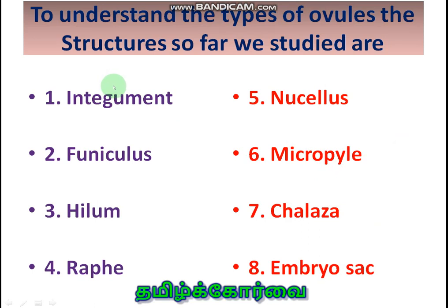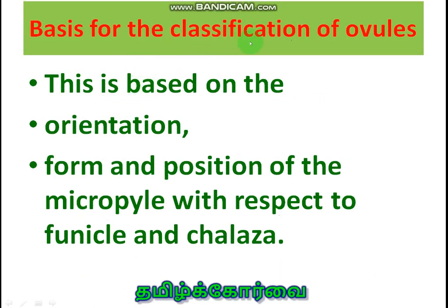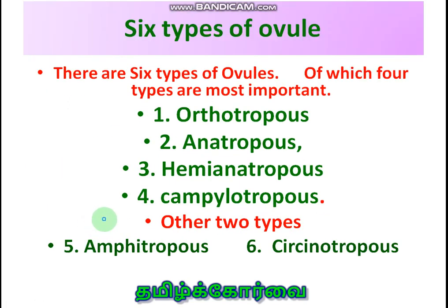These are the structures we studied so far: integument, funiculus, hilum, raphe, nucellus, micropyle, chalaza, and embryo sac — all studied to understand the types of ovule. The classification of ovules is based on orientation of the body of the ovule, and also the form and position of the micropyle with respect to funiculus and chalaza. Based on this, there are six types of ovules, of which four are most important: orthotropous, anatropous, hemianatropous, and campylotropous. The other two are amphitropous and circinotropous.